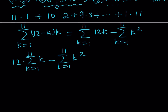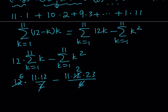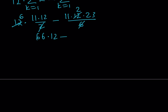The 12 can go out as a coefficient. The sum from 1 through 11 of k is just 1 plus 2 plus dot dot dot through 11, and the formula is n times n plus 1 divided by 2. For the sum of squares, the formula is n times n plus 1 times 2n plus 1 all over 6. Simplifying: 2 goes into 12 six times, and 6 goes into 12 two times, giving 66 times 12 minus 46 times 11. Now 66 times 12 is 792, and 46 times 11 is 506, and the difference is 286.